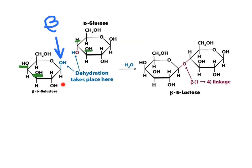Here we show the Haworth projections for galactose and glucose. The anomeric carbon for galactose is adjacent to the oxygen forming the pyranose ring. In galactose, two hydroxyl groups are on the same side above the plane of the ring, whereas in glucose only one is above the plane. The anomeric carbon can be the alpha or beta anomer, but it is always the beta anomer of galactose used to make the glycosidic bond — a beta-1,4 glycosidic bond.